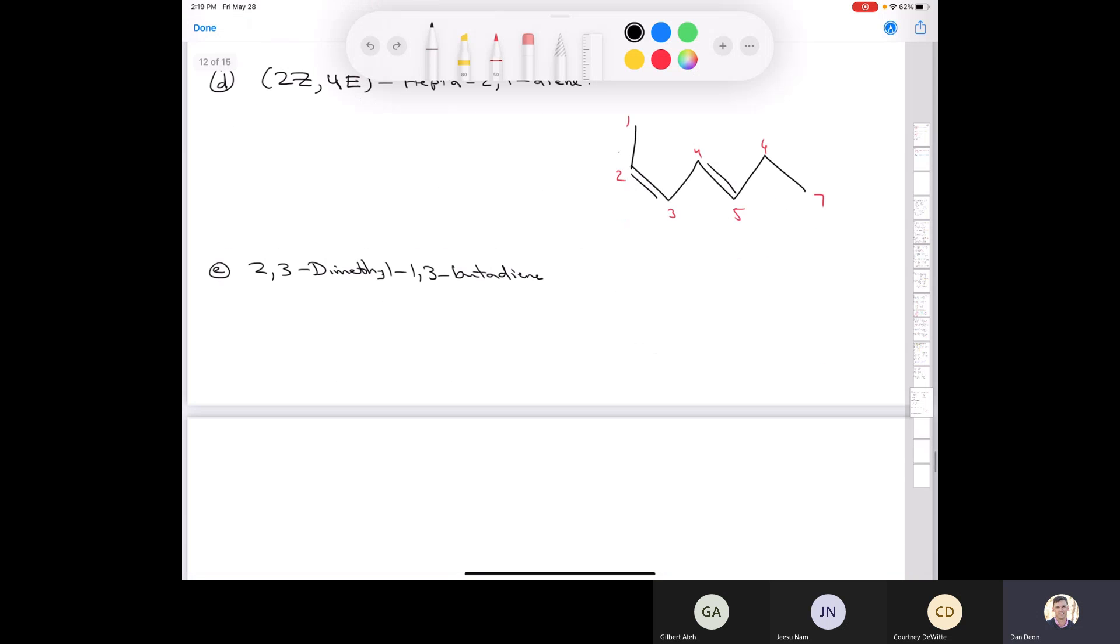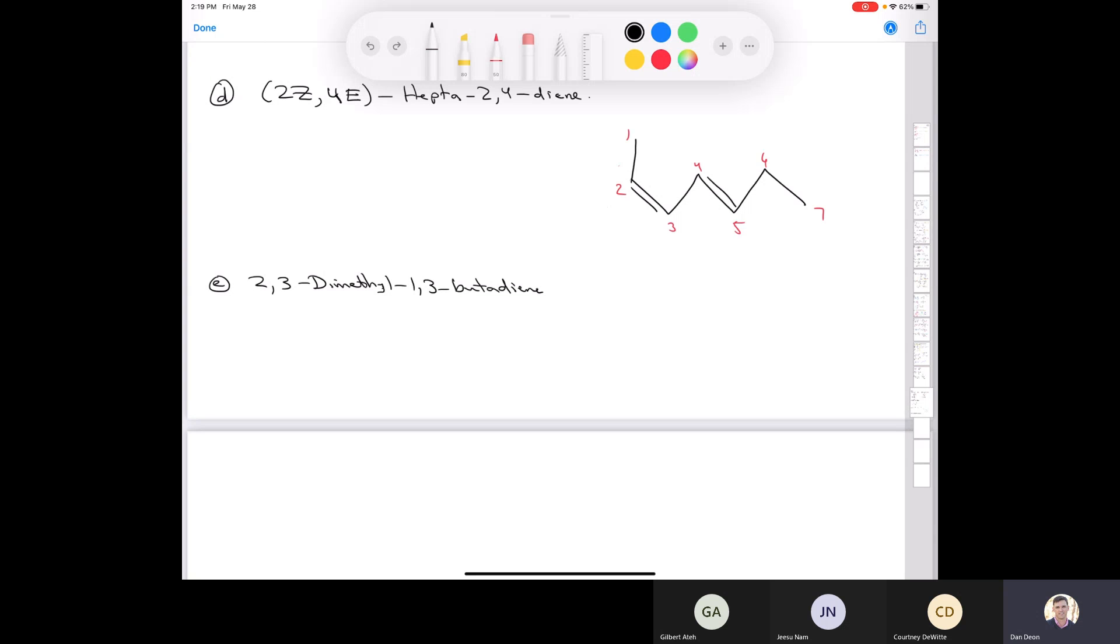And the next one is 2,3-dimethyl-1,3-butadiene. That's also a molecule that came up several times. If you draw 1, 2, 3, 4, so butane, then this is a diene. It has a double bond at carbons 1 and 3. So it's going to look like one here and one here like this. Then we have a methyl group at carbon 2 and another one at carbon 3 like that. And you can even rotate this sigma bond to draw the molecule as we saw it several times because we used it as a diene in some Diels-Alder reactions. So there you go. That's 2,3-dimethyl-1,3-butadiene.